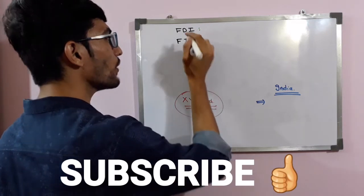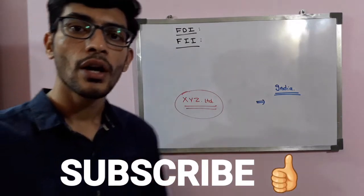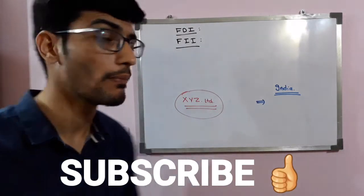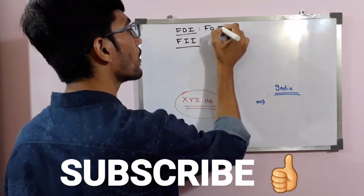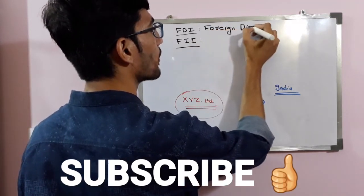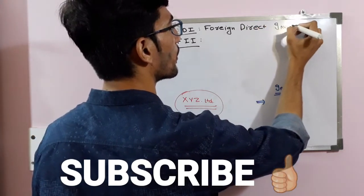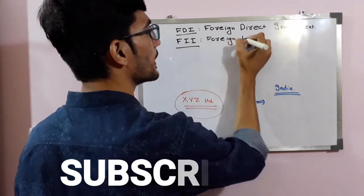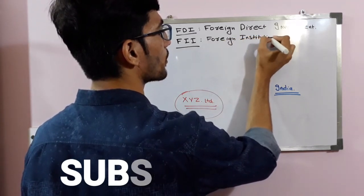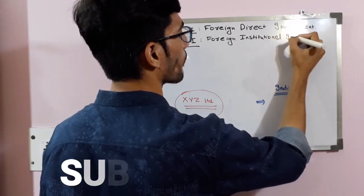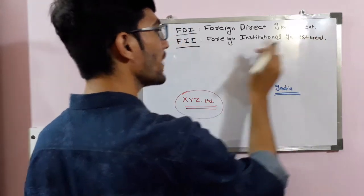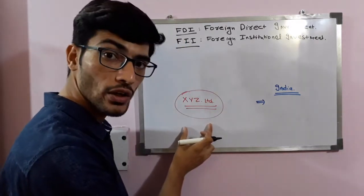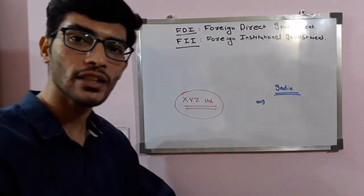First of all we have to understand what FDI stands for. FDI stands for Foreign Direct Investment and FII stands for Foreign Institutional Investment. These are the two methods by which this particular company of America can invest in India or any other country of the world.